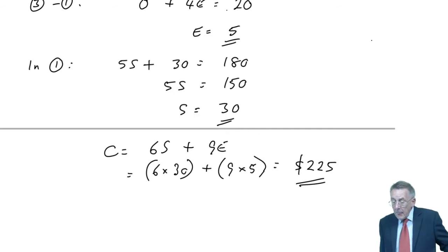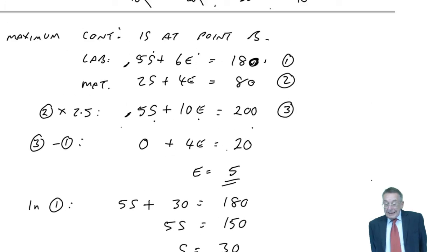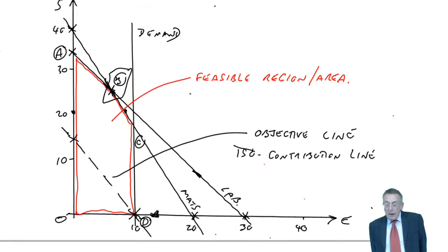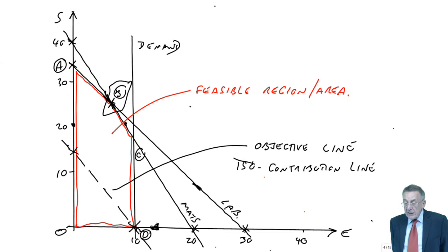Well, we now know how many S's and E's, so 6 times 30 S's plus 9 times 5 E's. What's the total? 180, 45. There is the maximum contribution, 225.